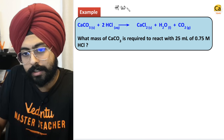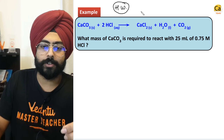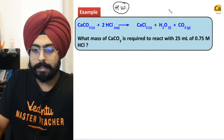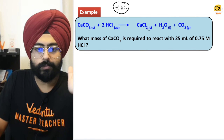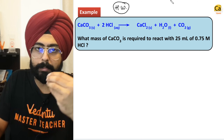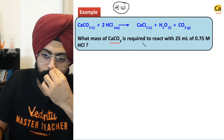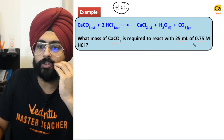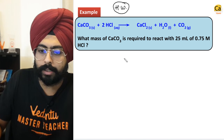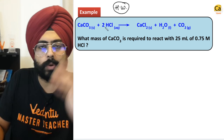This is the homework question from the previous class. In every class I give you a homework question. Very simple question over here — the equation given is already balanced. What mass of CaCO3 is required to react with 25 mL of 0.75 molar HCl?